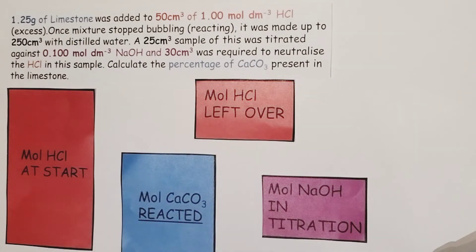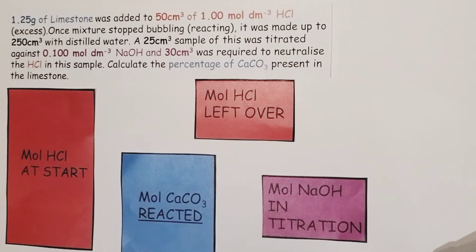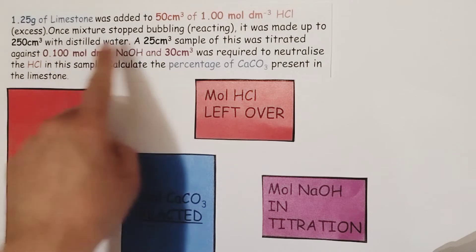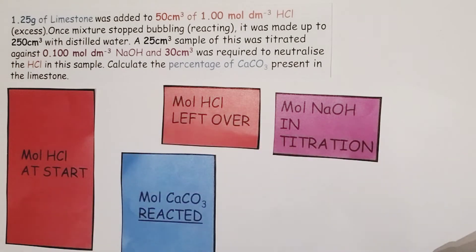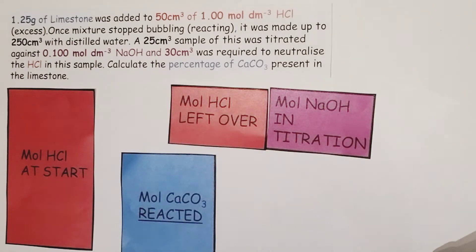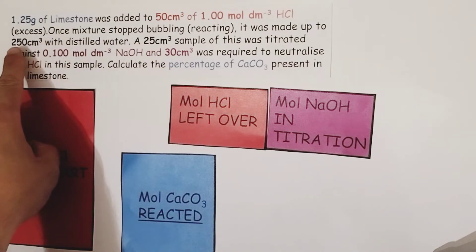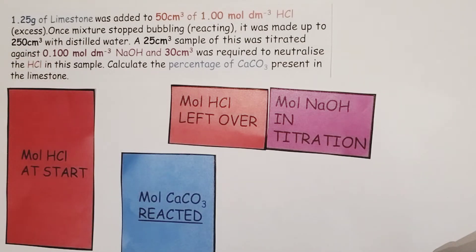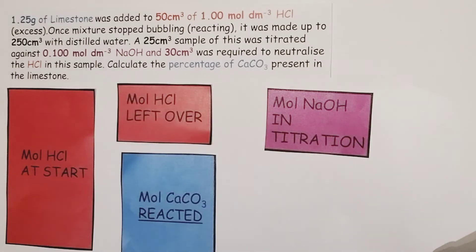We can't go straight to that answer. All we can work out from this information initially is the number of moles of sodium hydroxide, because we have the concentration and volume of sodium hydroxide. So we calculate the moles of sodium hydroxide involved in one titration against 25 centimetres cubed of hydrochloric acid. Using the molar ratio from the balanced equation, we can work out the moles of hydrochloric acid in that 25 centimetre cubed aliquot. We then need to scale up to the 250 centimetre cubed volumetric flask amount of moles — multiplying by 10 — so we now know how many moles of hydrochloric acid were left over.